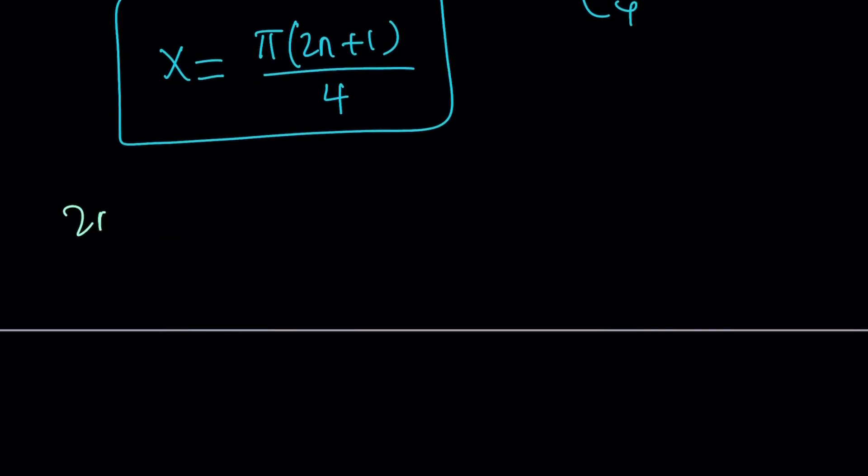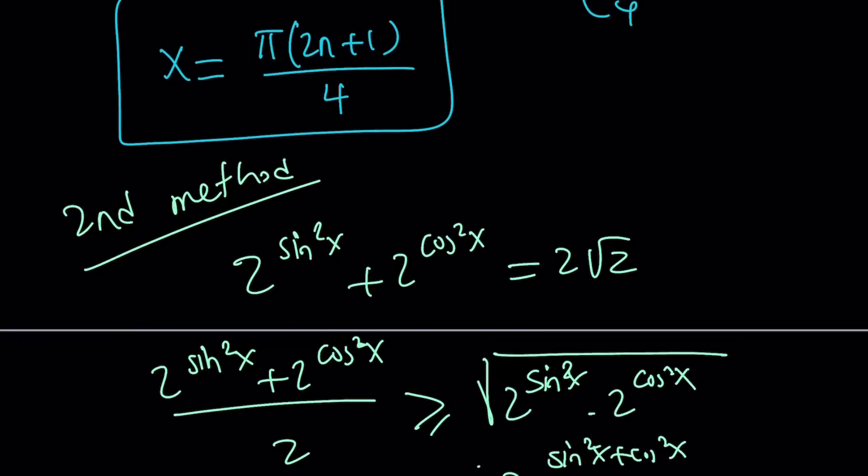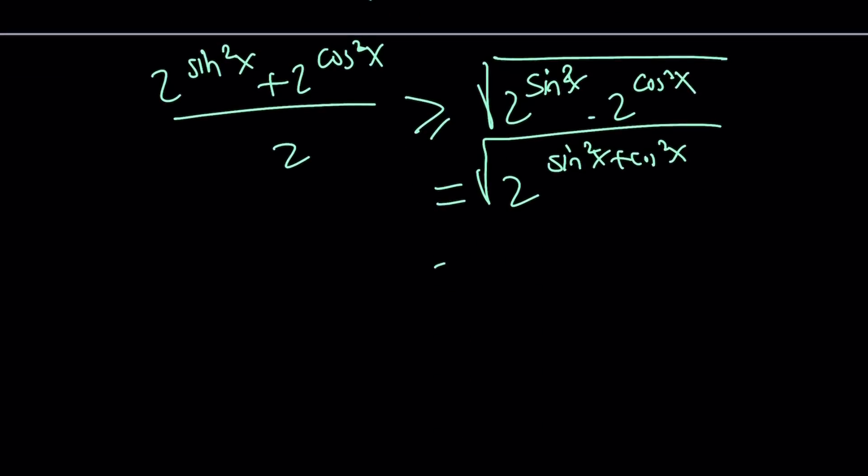So our second method is more beautiful, in my opinion, because it uses an inequality that we used recently, which is called AMGM. Obviously, both of these quantities are positive, so let's go ahead and use AMGM. AMGM says if you take the arithmetic mean or the average of two numbers, it's always greater or equal to their geometric mean, and geometric mean means the square root of the product. But this is 2 to the power sine squared x plus cosine squared x, which is 2 to the power 1, which is 2. So this becomes square root of 2.